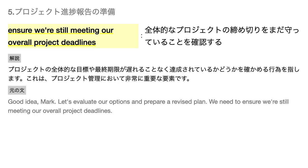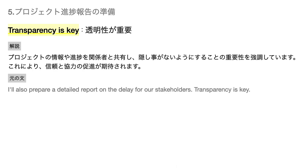Ensure we're still meeting our overall project deadlines — プロジェクトの全体的な目標や最終期限が遅れることなく達成されているかどうかを確かめる行為を指します。これは、プロジェクト管理において非常に重要な要素です。Transparency is key — プロジェクトの情報や進捗を関係者と共有し、隠し事がないようにすることの重要性を強調しています。これにより、信頼と協力の促進が期待されます。